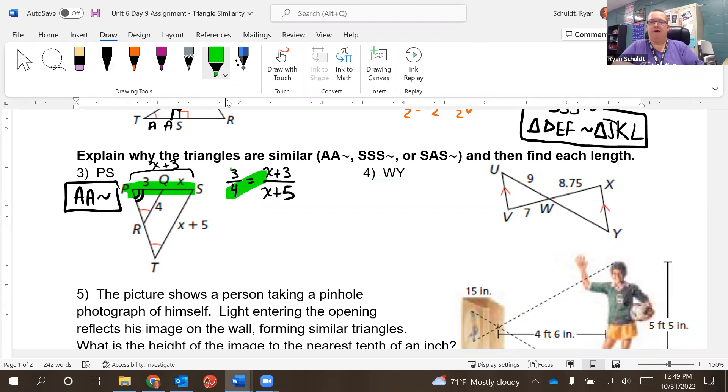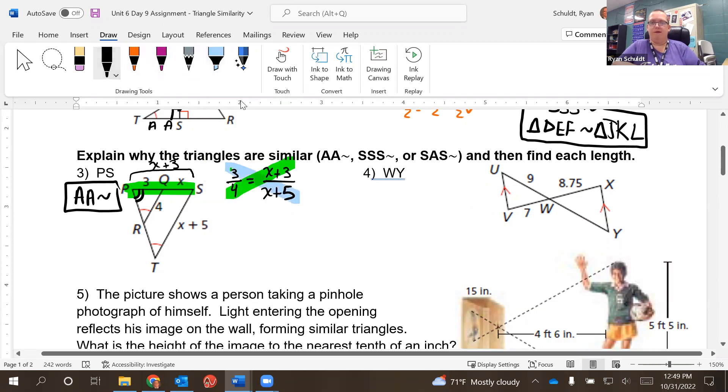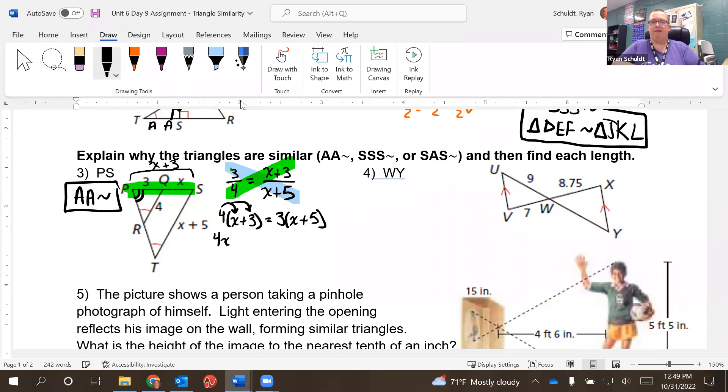So I know it looks intimidating, but the same thing applies. You just cross multiply. So I'm going to do four times X plus three and then three times X plus five. So four times X plus three equals three times X plus five. Distribute the four. It's going to get us four X plus 12 equals. Distribute the three, we get three X plus 15.